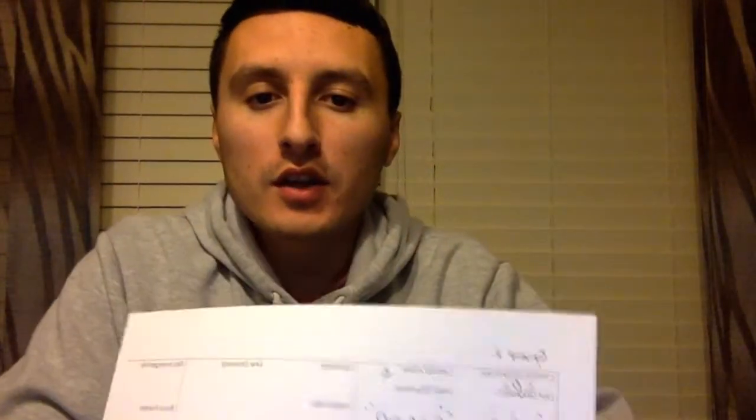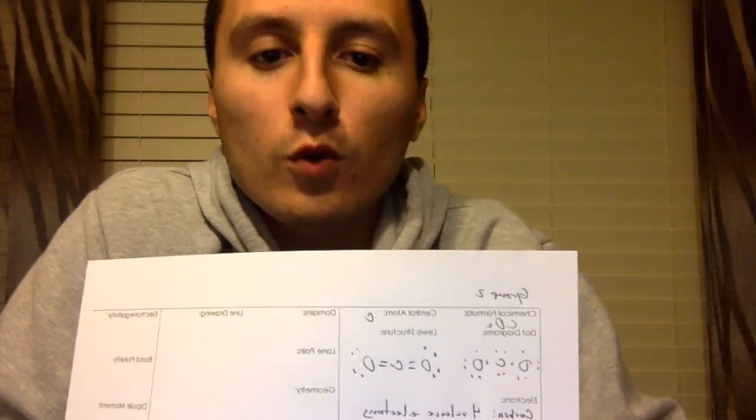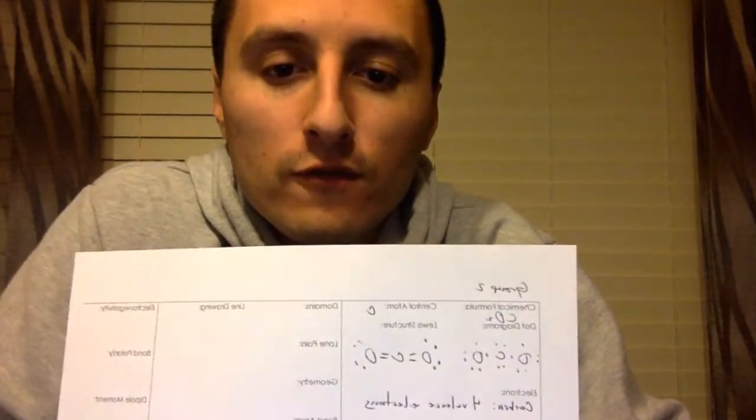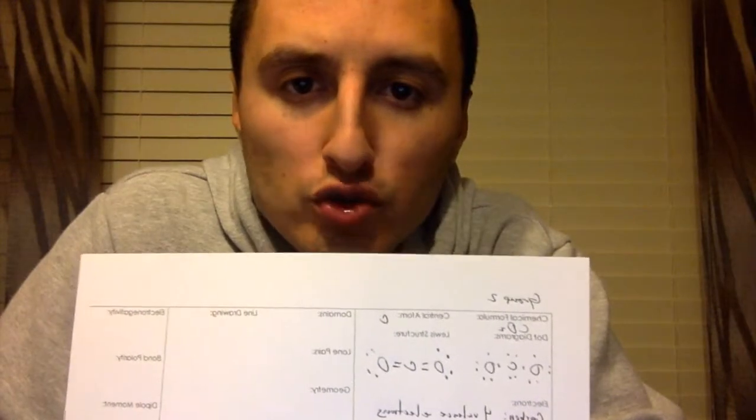Now we're here with the chemical formulas in group two. For our first chemical formula we have CO2 — most of us will probably already recognize this as carbon dioxide.